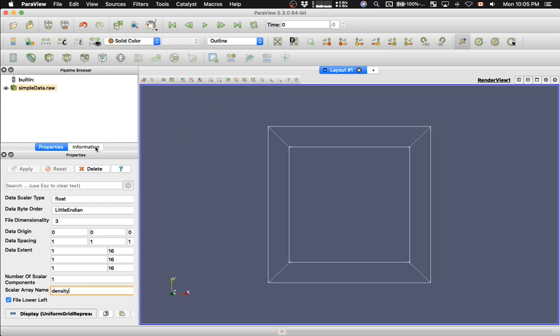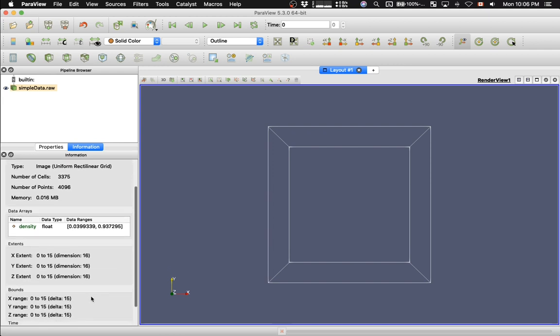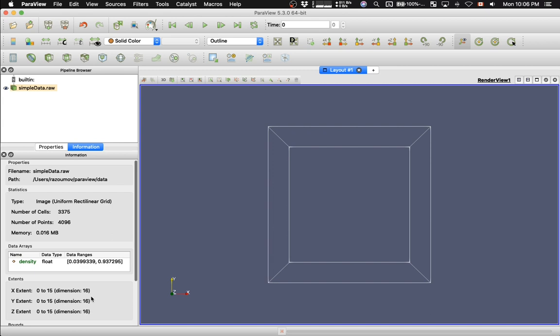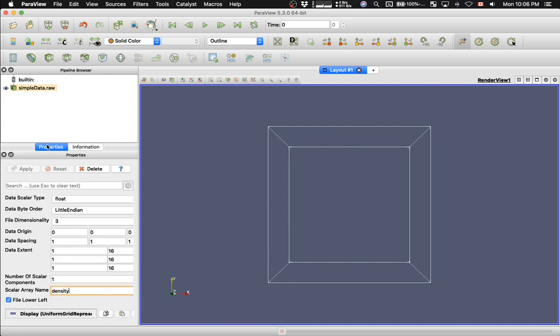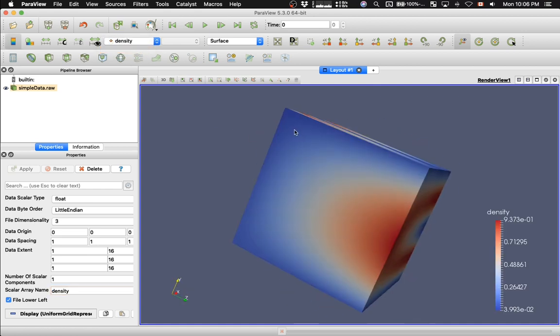You can actually verify. You can go to the Information tab, and you see that, yes, there's an array called Density. It's single precision float. This is the data range roughly from 0.04 to 0.9394. And then it's a 16 cube array. And let me click again on Properties. And then in this drop-down menu, I'm going to switch to the surface view. And then here, I'm going to color the surface by density, the only variable that we have in this data set.